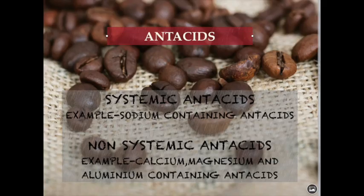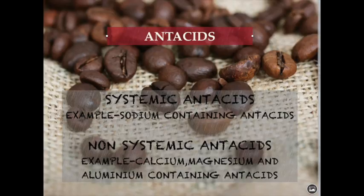Antacids are alkaline substances used to neutralize the excess acid released in the stomach, which causes pain and ulcers. Excess acid release occurs in various gastrointestinal disorders including gastritis, various types of ulcers, and gastroesophageal reflux disorder. Antacids also act by inactivating the stomach enzyme pepsin. Antacids are classified into systemic antacids, which are soluble and readily absorbed by the GIT causing electrolyte imbalance and alkalosis — for example, sodium-containing antacids, which are contraindicated in people with hypertension as they may cause edema.